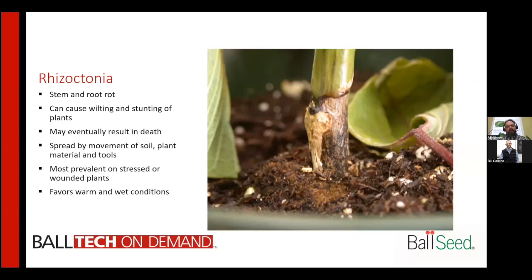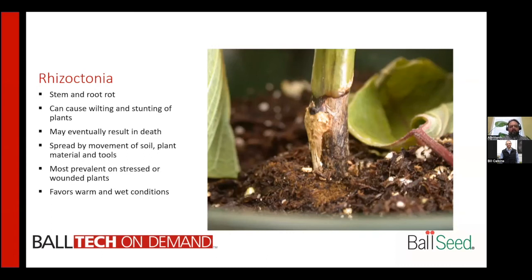Rhizoctonia is another one that's also very common in both foliage and bedding plants. It typically causes a stem and root rot — you'll see the rot right at the soil surface. It can cause wilting and stunting of the plants as well and may eventually result in the death of the plant. It's spread by movement of soil, plant material, and tools, and is most prevalent on stressed or wounded plants. It also favors warm and wet conditions. Control of Rhizoctonia can be done with Cleary's 3336, Empress Intrinsic, Heritage, Medallion, Pageant Intrinsic, ProStar, and Turney.